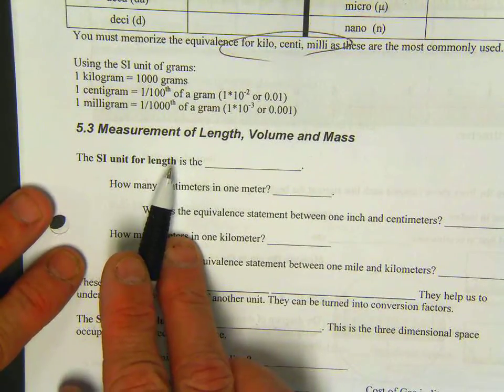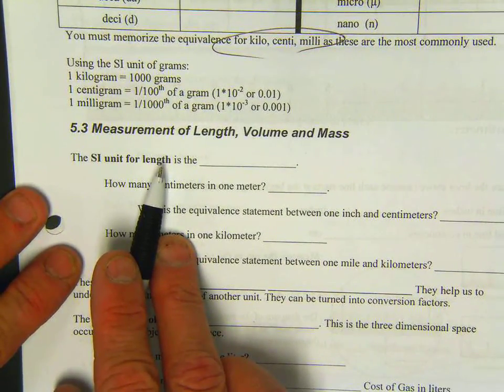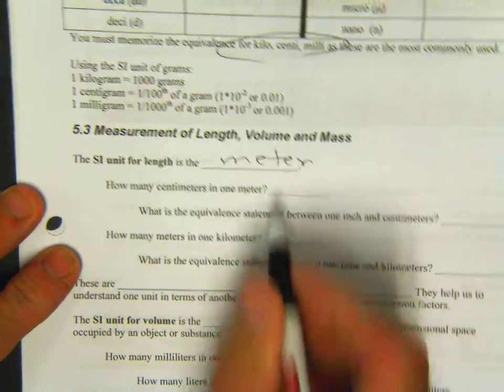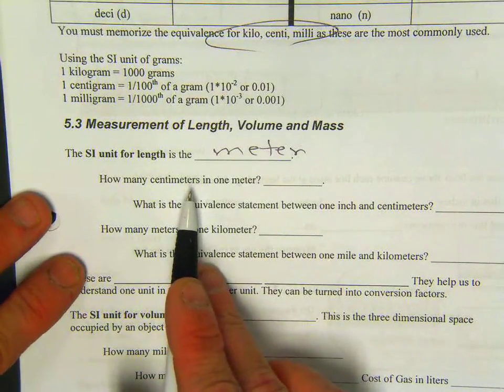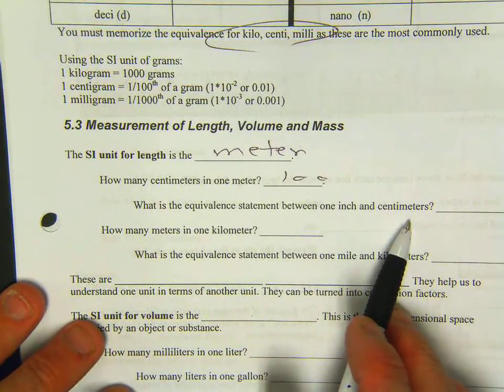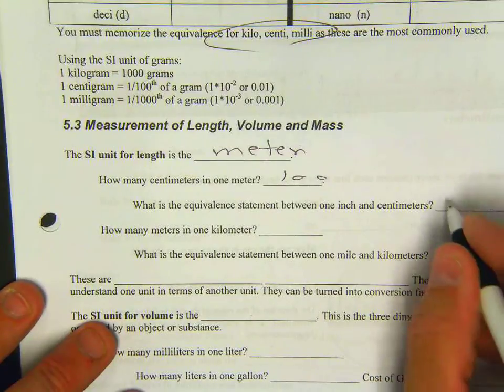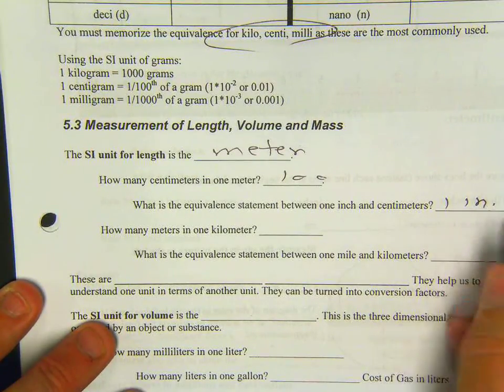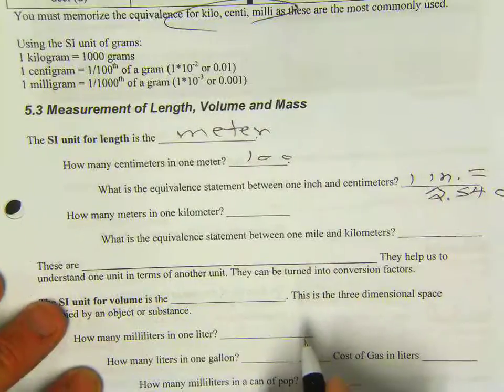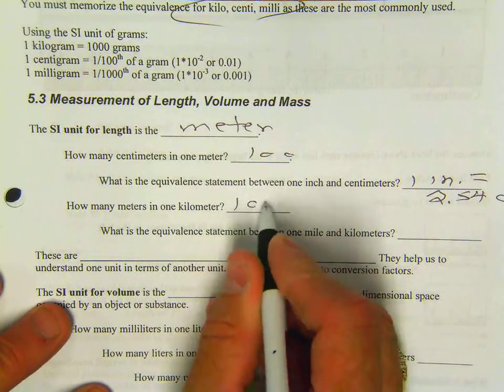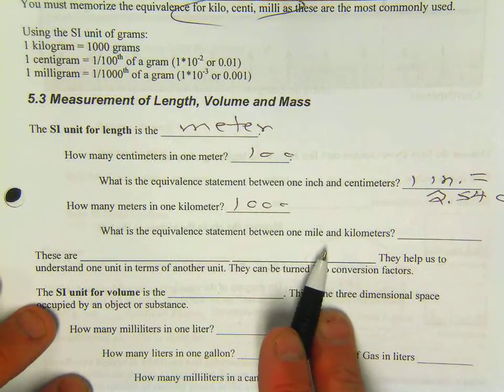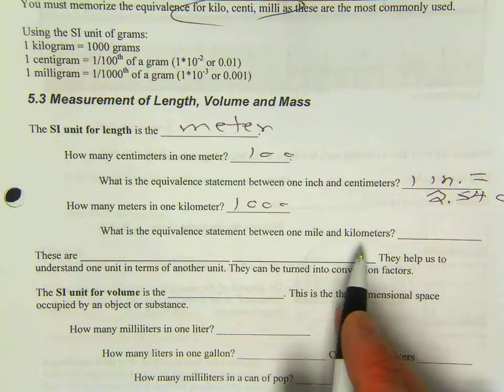Let's look at some practical applications of this. The SI unit for length is the meter. How many centimeters in one meter? That would be 100. What's the equivalent statement between one inch and centimeters? I'm going to say one inch equals 2.54 centimeters. How many meters in a kilometer? 1,000. What's the equivalent statement between one mile and kilometers?